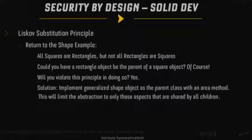Liskov substitution principle: all squares are rectangles but not all rectangles are squares. If you had a rectangle be the parent of a square object, you can run into issues when setting the side of a square — you'd have to overwrite methods to ensure both sides are set rather than setting width and height individually. If you do that, you'll violate this principle. It's better to implement a generalized shape object with its own area method rather than using that inheritance from rectangle.